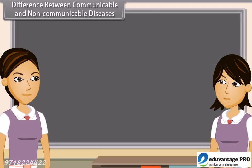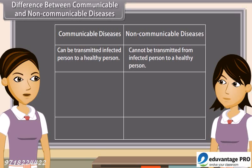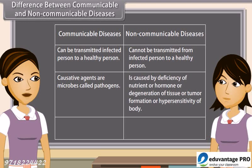Communicable diseases can be transmitted from an infected person to a healthy person, while non-communicable diseases are caused by deficiency of nutrient or hormone, or degeneration of tissue, or tumour formation, or hypersensitivity of the body.